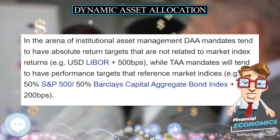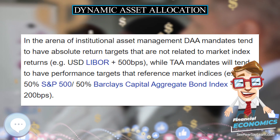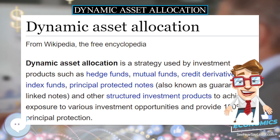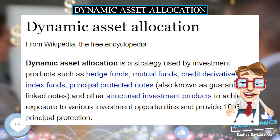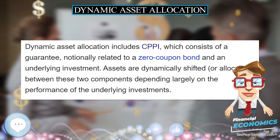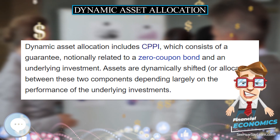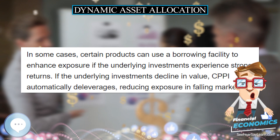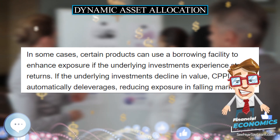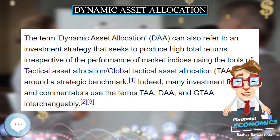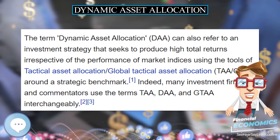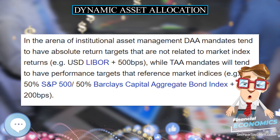In the arena of institutional asset management, DAA mandates tend to have absolute return targets that are not related to market index returns — for example, LIBOR plus 500 basis points — while TAA mandates will tend to have performance targets that reference market indices, for example 50% S&P 500 / 50% Barclays Capital Aggregate Bond Index plus 200 basis points.